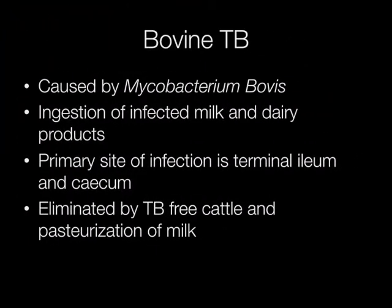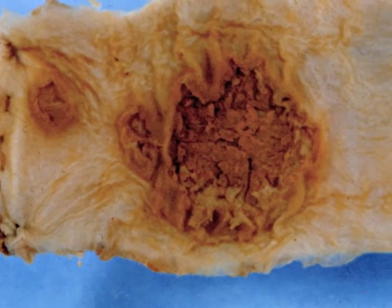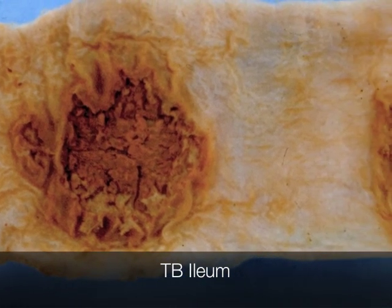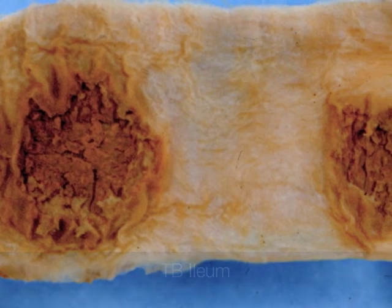Finally, bovine TB. This is caused by infection of milk or dairy products by an organism called Mycobacterium bovis. The primary site of infection is in the terminal ileum and cecum. Thanks to TB-free cattle and pasteurization of milk, bovine TB has largely been eliminated. This is a piece of ileum showing ulceration due to tuberculosis caused by bovine TB.